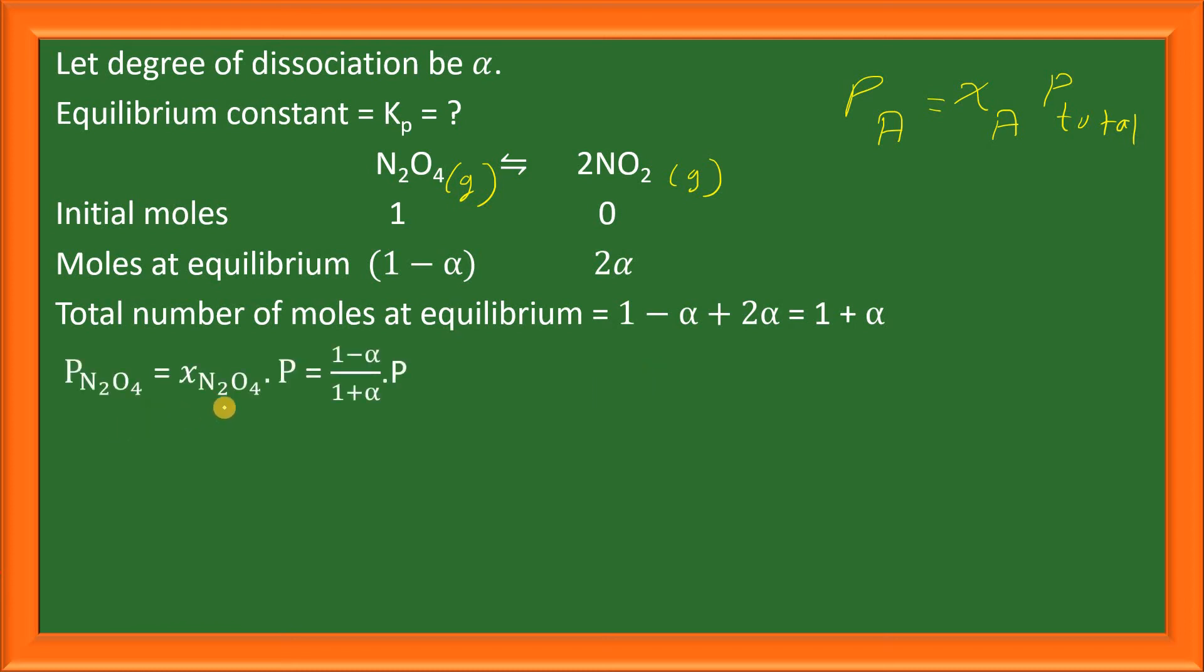Partial pressure of N2O4 will be the mole fraction of N2O4 times P. The mole fraction of N2O4 is the number of moles of N2O4, which is 1 minus alpha, divided by the total number of moles, which is 1 plus alpha. Therefore, the partial pressure of N2O4 is (1 minus alpha) upon (1 plus alpha) times the total pressure P.